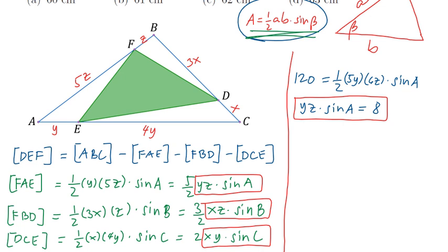Now, we do the same process with angle B. We have 120 equals 1 half times this side times this side. We have 4x times 6z times sine of angle B. If we solve for XZ sine of angle B, we should get 10.